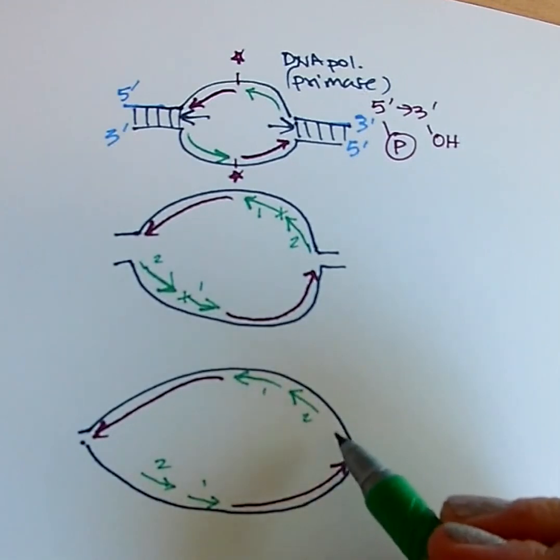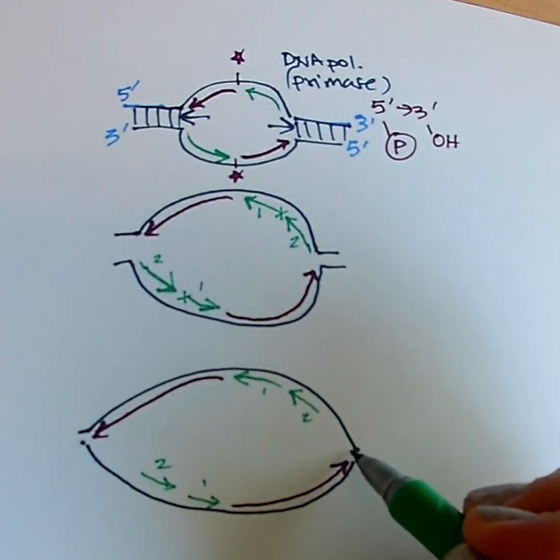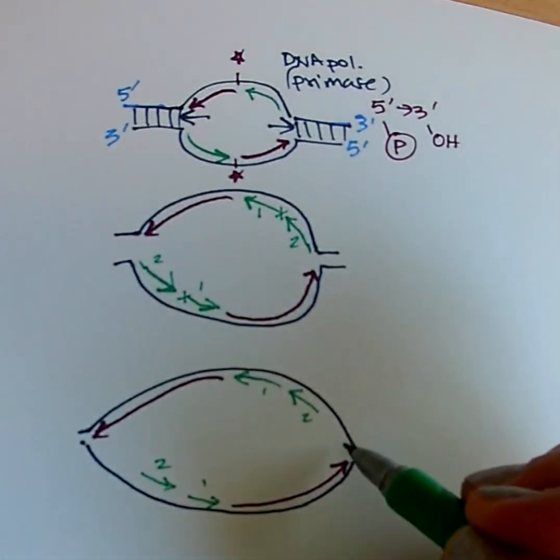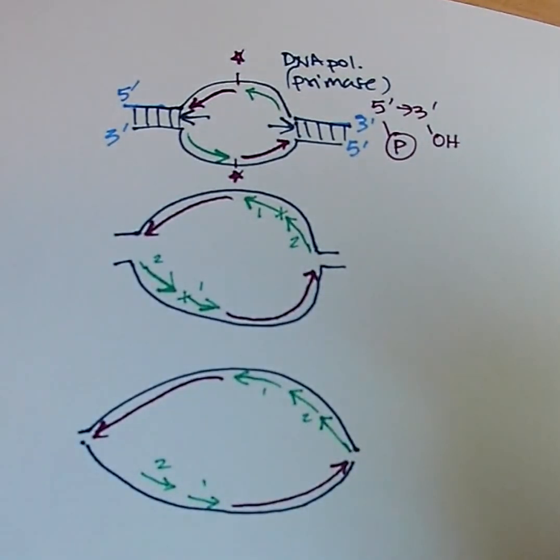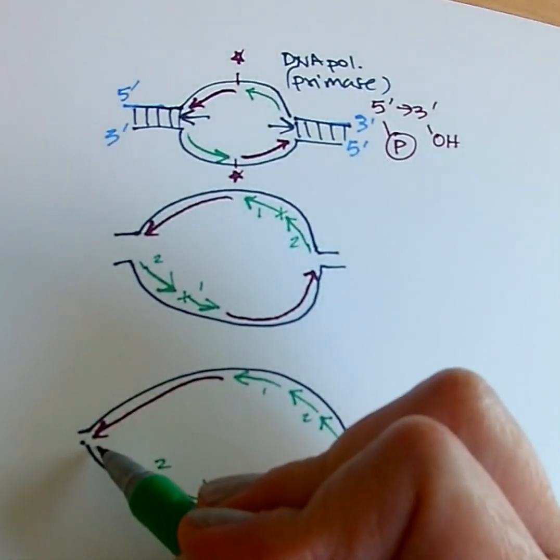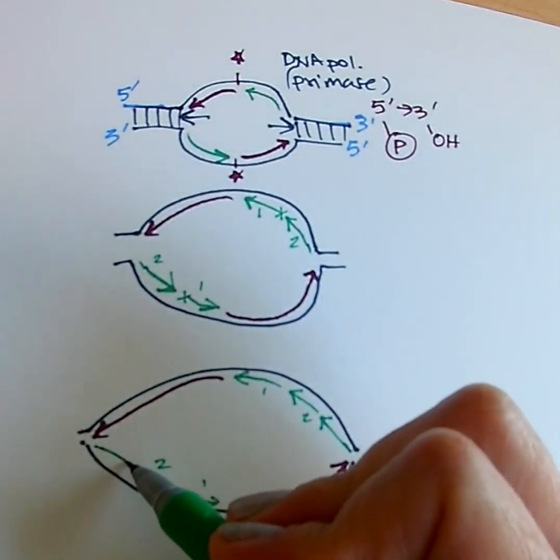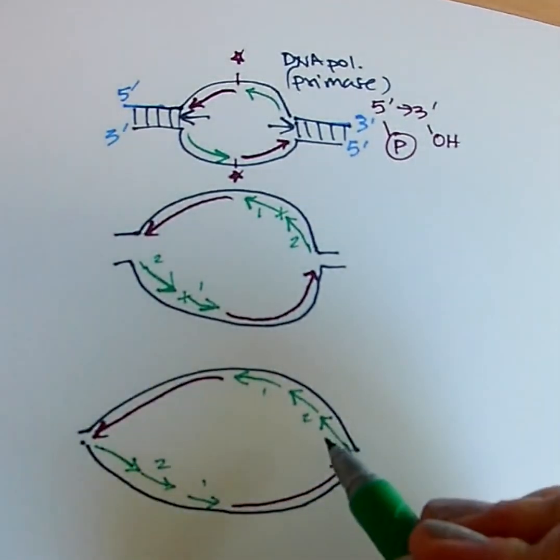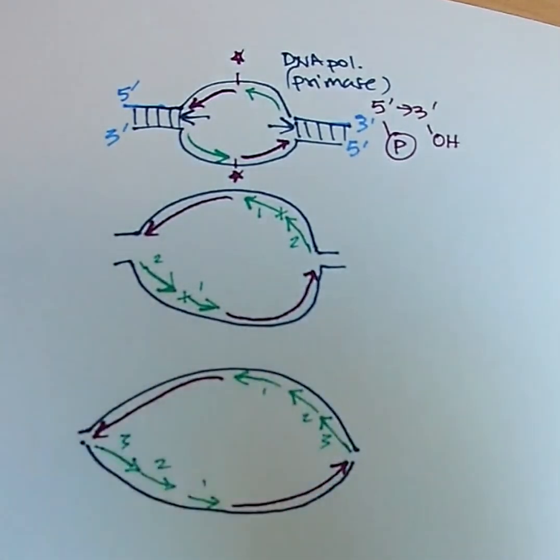And now the fork's opened up even further. So now primase can come here, make a little piece of nucleic acid polymers, and then DNA polymerase can extend off of it. Same thing here. Primase comes in here, primase comes in, and polymerase can extend off of it. So this gives us piece number three.